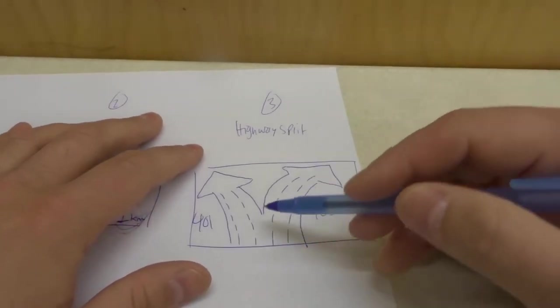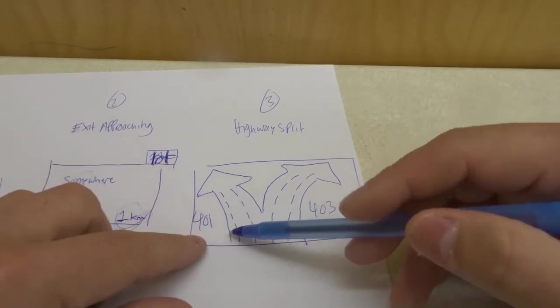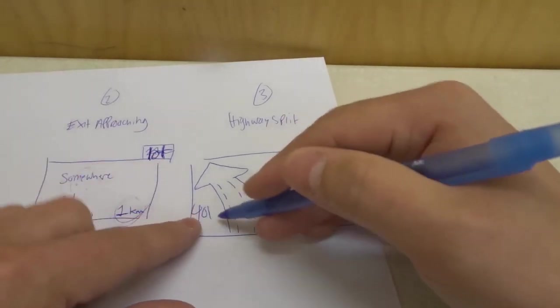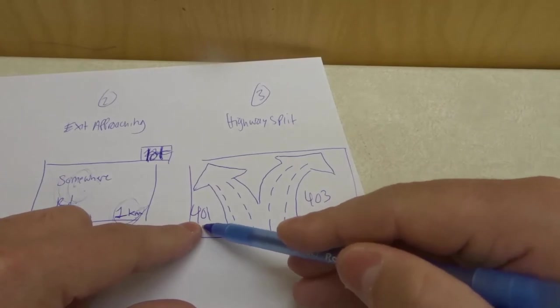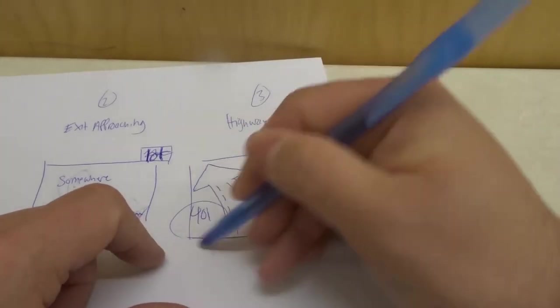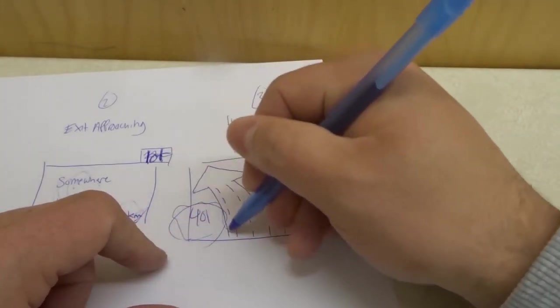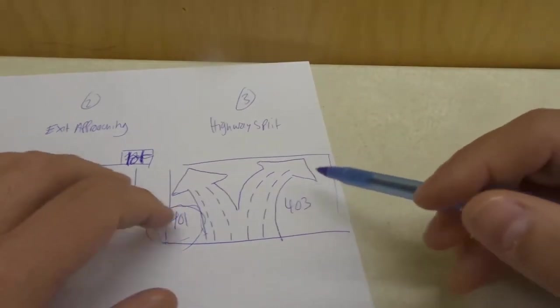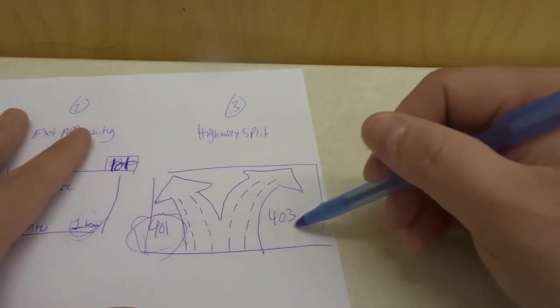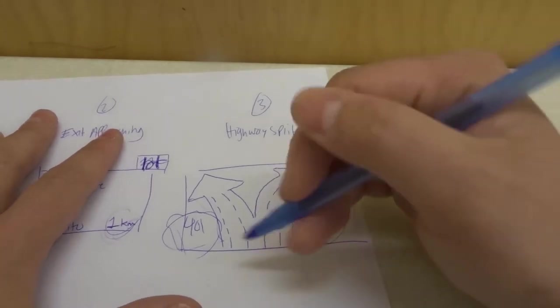Last but not least is the third type of highway sign that you might come across, which is a highway split. So in this case it tells you if you stay left you're going to go onto highway 401. This will have a highway sign around and it sort of looks almost like a crown in my opinion. And then if you stay right you're going to go on highway 403.